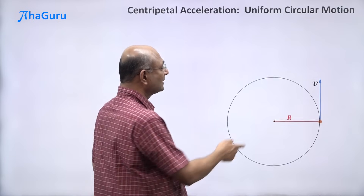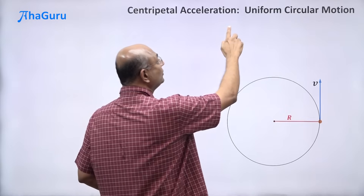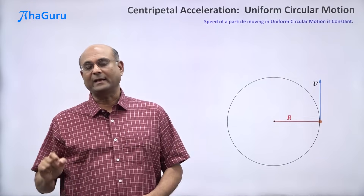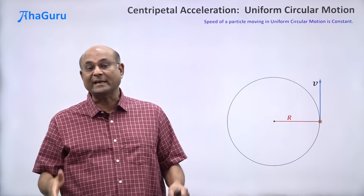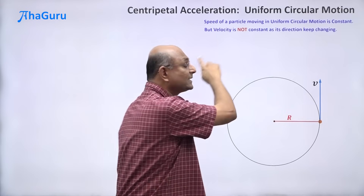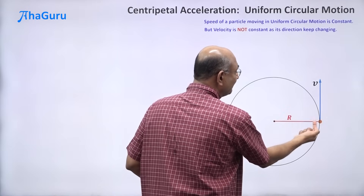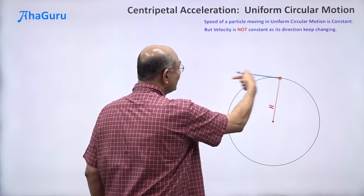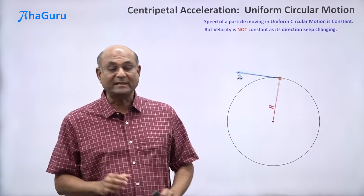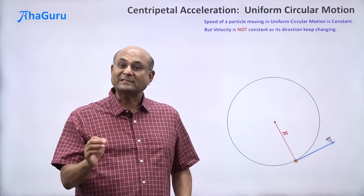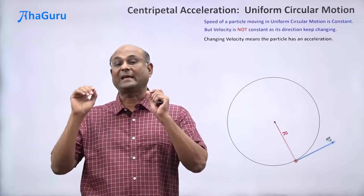Let us look at this particle moving in a circular path with constant speed. Uniform circular motion means the speed of the particle is constant. You might be wondering: if speed is constant, how does it have an acceleration? Speed is constant, but velocity is not constant, because the direction keeps changing. The velocity direction is changing, which means velocity is changing. And acceleration is the rate of change of velocity, so changing velocity means the particle must have an acceleration.